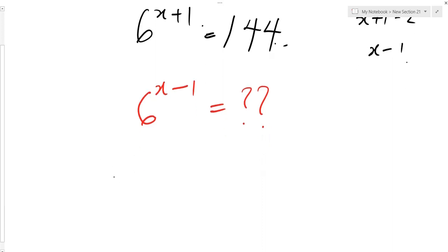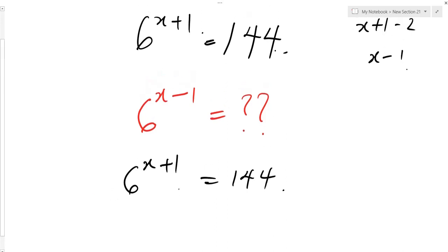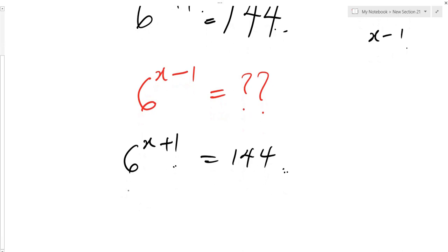For us to do that, we need to multiply both sides. Because what you do to this side, you also do it to this other side, so the equality sign will remain. We need to multiply both sides with 6 to the power of minus 2.